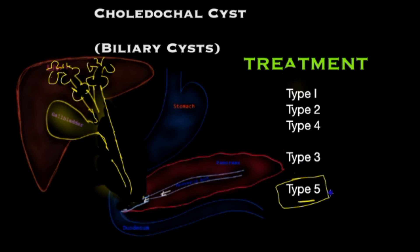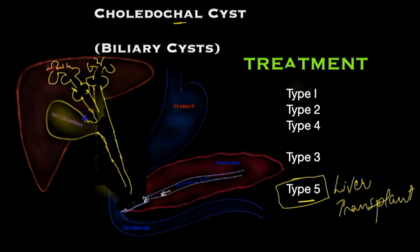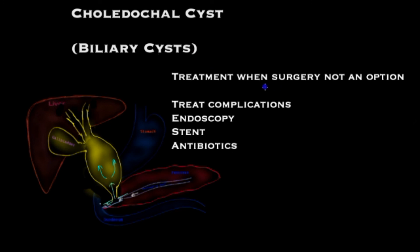The treatment of type 5 cyst — Caroli's disease — is more complex and should be carried out in a specialist unit. It may include a variety of techniques including surgery to control symptoms; however, if there is liver fibrosis in Caroli's syndrome, then liver transplantation is often the treatment that resolves the myriad complications. For patients who do not want surgery or are not candidates, the choledochal cyst may not cause any symptoms, but if complications arise such as stones or stricture at the exit of the bile tube, an ERCP is performed to retrieve stones and sometimes to insert a stent connecting the bile tube to the bowel.